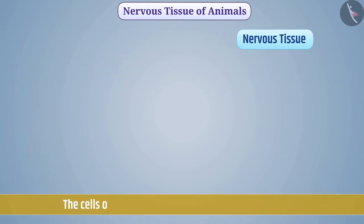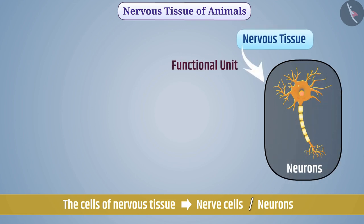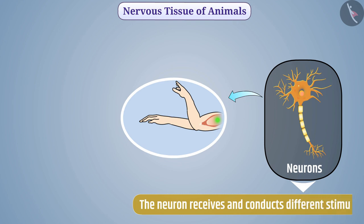The cells of nervous tissue are called nerve cells, that is, neurons. Neuron is the functional unit of nervous tissue. The neuron stimulates very quickly and transmits stimulus very quickly from one place to another — the neuron receives and conducts different stimuli.